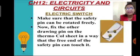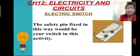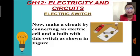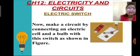Next, tie two wires to the pins before they are fixed to the wooden board or thermocoil. You can see in the image how it should be arranged. This is the arrangement of the safety pin and drawing pins along with the wires, which will act as a switch for the circuit. Then make a circuit by connecting an electric cell and a torch bulb along with the two wires connected to the switch, as shown in the diagram.